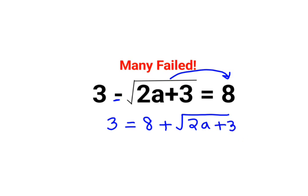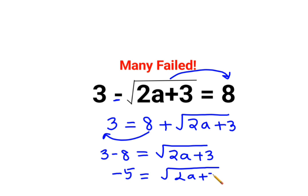Now in order to find the value of a, let's shift the other number, the number which is without the root on this side of the equal to. That would be 3 minus 8, because this is positive and when you shift it on the other side you will have to get it into a negative sign. So now we have minus 5 equals to root of 2a plus 3.